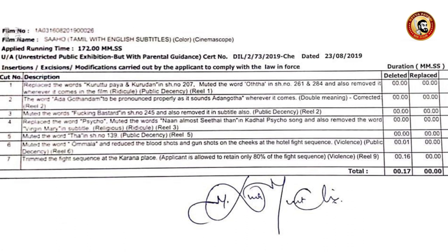Cut number 6: Mute the words O'MALA and reduce the blood shots and gun shots on the cheeks. Violence and public decency. Cut number 7: Trim the fight sequence at the Karna Palace. Violence.